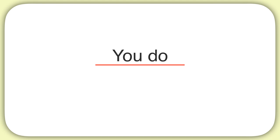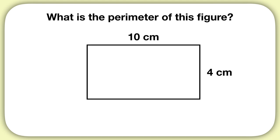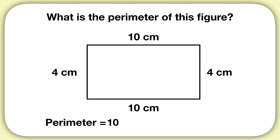Now it's time for you to practice on your own. What is the perimeter of this figure? You can first fill in the missing side lengths — this side is 4 centimeters, and this one is 10 centimeters. The perimeter will be 10 plus 4 plus 10 plus 4. When you add that all up, the perimeter is 28 centimeters.